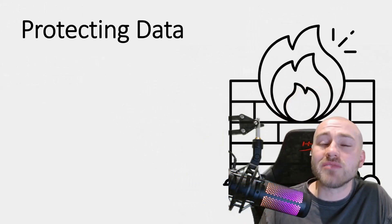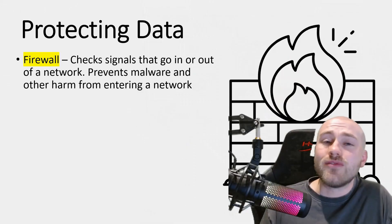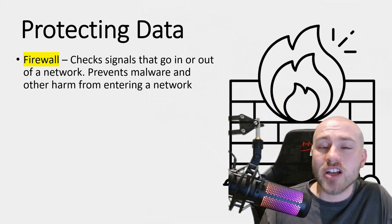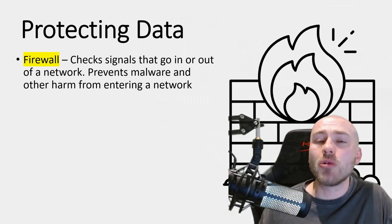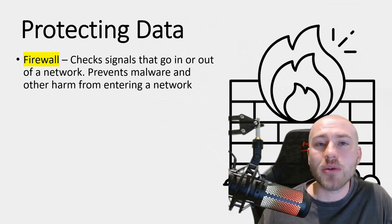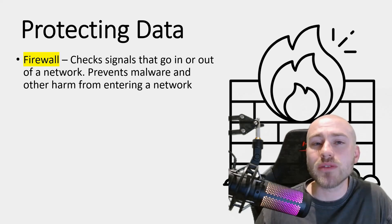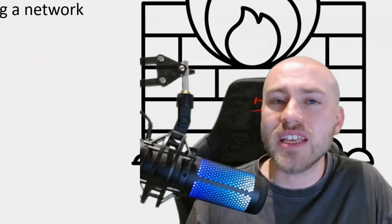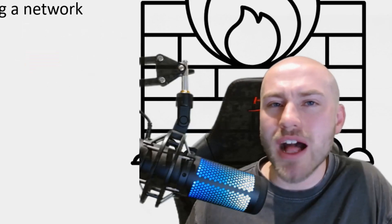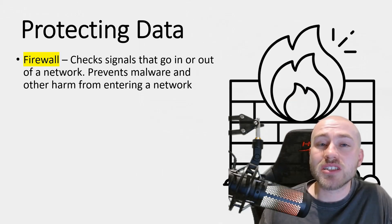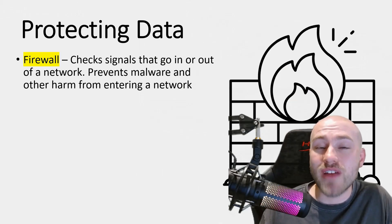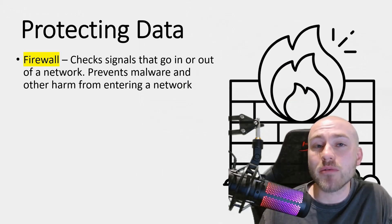There are different ways of protecting data. The first prevention method is a firewall. A firewall checks all the signals going in and out of a network, preventing malware from entering. If a packet looks suspicious, the firewall will block it from entering the network.